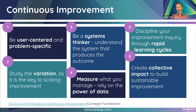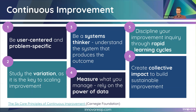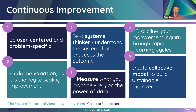There are six core principles of continuous improvement — we credit the Carnegie Foundation for this work. If you were with us in our October webinar, Nick, one of our founders, and I presented on core conditions of continuous improvement. We're going to skim through this quickly today — we really want to focus on the fifth one. The first pillar is: be user centered and problem specific.